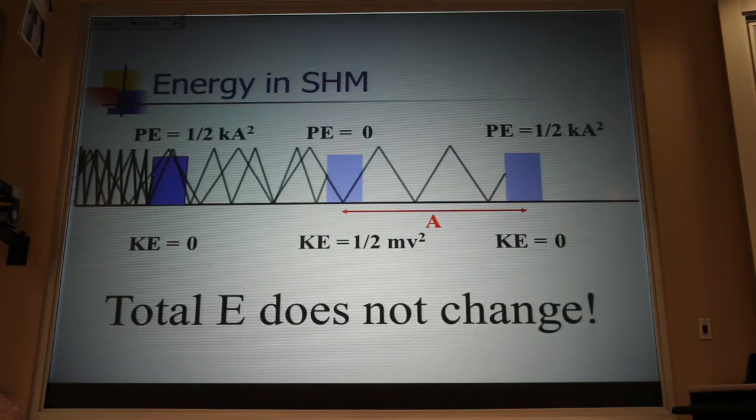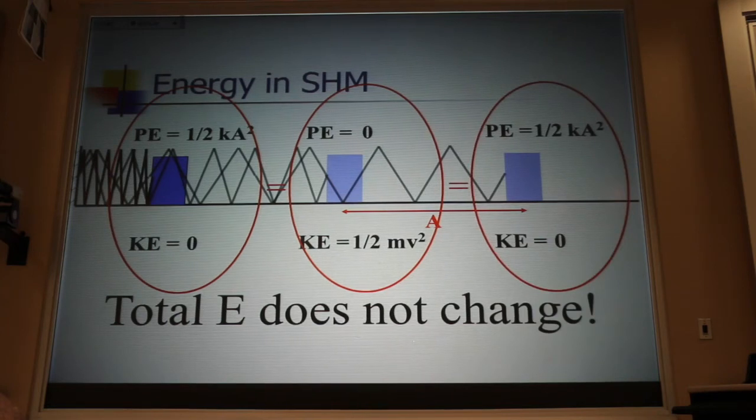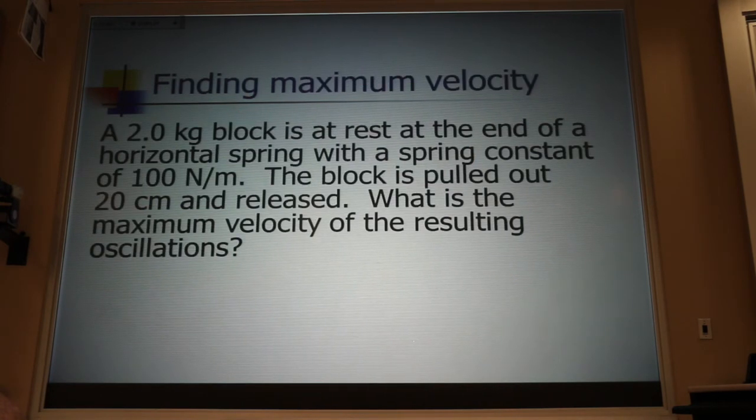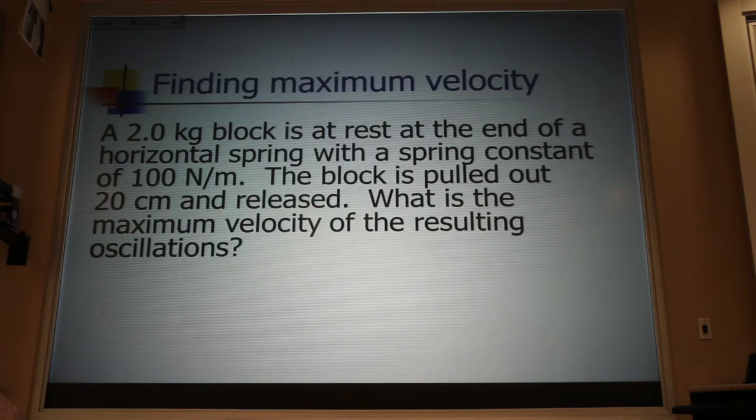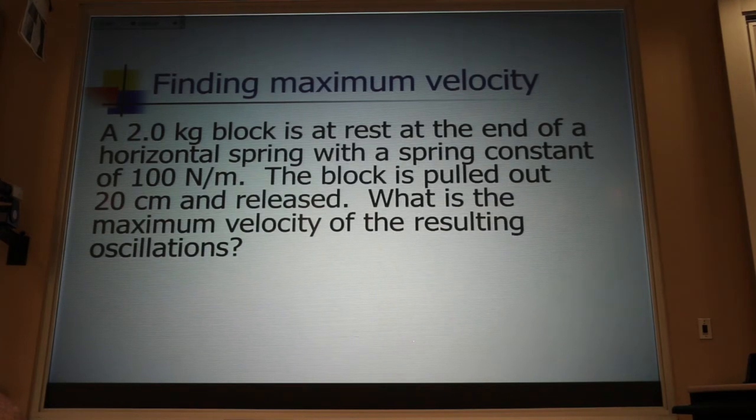The key is that the energy here has to equal the energy there has to equal the energy there. It stays constant. So the first step in solving these problems, and you've got three of them for Wednesday, the first step is to find that total energy any way you can. Here's a sample. This is very similar to one of your three problems. A two kilogram block is at rest at the end of a horizontal spring. The spring constant is 100 newtons per meter. The block is pulled out 20 centimeters and released. What's the amplitude of this oscillation going to be? 20 centimeters, 0.2 meters. What is the maximum velocity of the resulting oscillations? And you have these formulas.